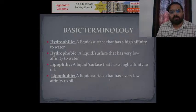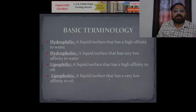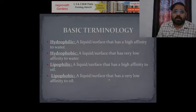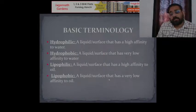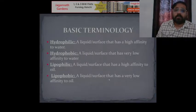Generally, surfactants have two types of parts: one is the hydrophilic part and the second is the hydrophobic part, also called lipophilic and lipophobic. They consist of two chains — a polar head and a nonpolar tail. The polar end attaches to the polar medium and the nonpolar head attaches to the nonpolar medium, reducing surface tension between the two phases.